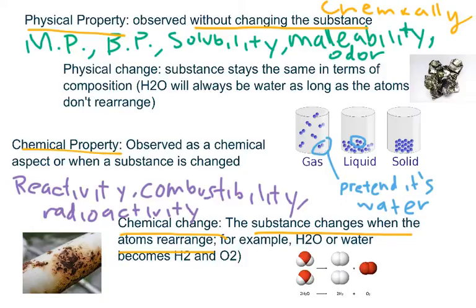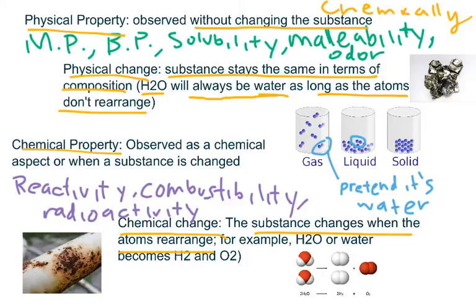On the other hand, if we have a physical change, the substance will stay the same in terms of composition, so its atoms will not rearrange. For example, water, or H2O, will always be water as long as the atoms don't rearrange. As long as H2O remains H2O, no matter what you do to it, then the substance will stay the same, and thus it will be a physical change.